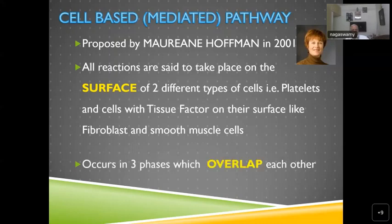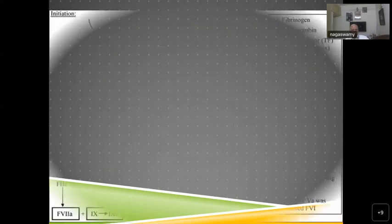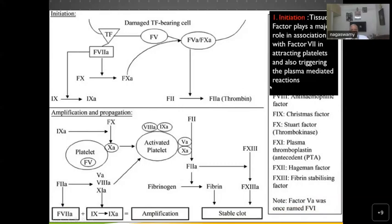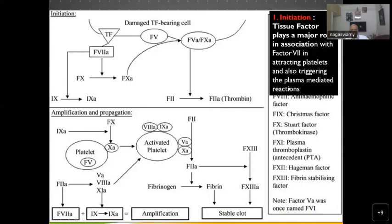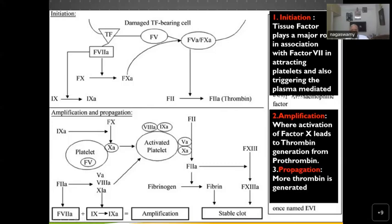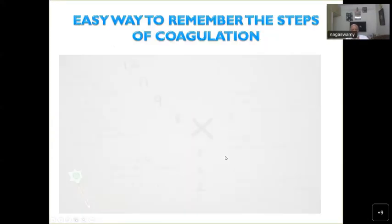This occurs in three overlapping phases: initiation, amplification, and propagation. In the initiation phase, the damaged tissue factor-bearing cell triggers all the changes. Tissue factor plays a major role in association with factor 7 in attracting platelets and triggering plasma-mediated reactions. In amplification, activation of factor 10 leads to thrombin generation. In propagation, more thrombin is generated.